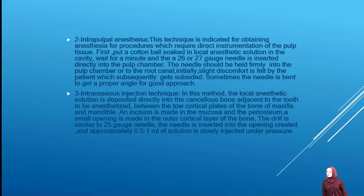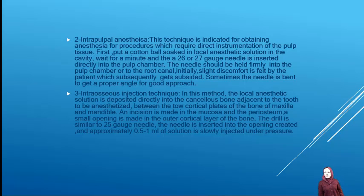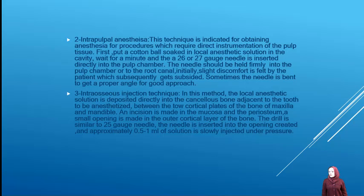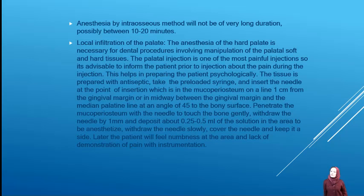Intraosseous injection technique: in this technique, the local anesthetic solution is deposited directly into the cancellous bone adjacent to the teeth to be anesthetized, between the two cortical plates of the maxilla and mandible. An incision is made in the mucosa and periosteum, and a small opening is made in the outer cortical layer of the bone using a drill similar to a 25 gauge needle. The needle is inserted into the opening and approximately 0.5 to 1 ml of solution is injected under pressure. Anesthesia by the intraosseous method is of short duration, possibly between 10 to 20 minutes.